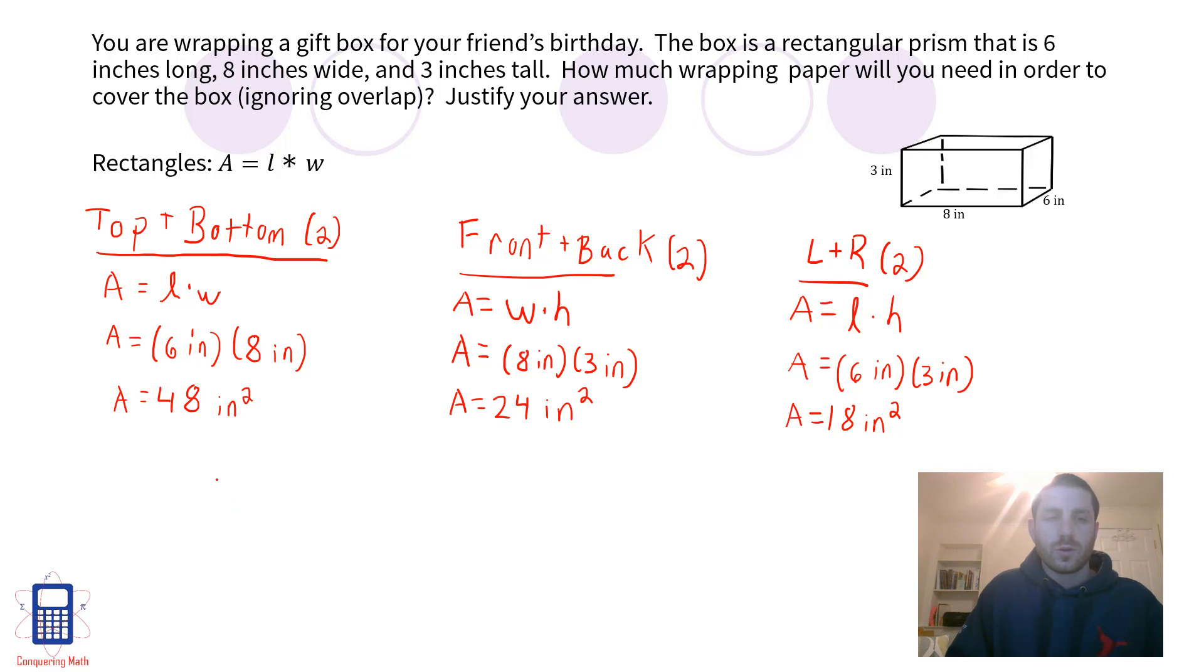So what we'll do now is we'll find the surface area, which we use a capital S for surface area. So we need to add 48 square inches, 24 square inches, and 18 square inches to find the surface area, but we need to use each of those twice. So we can either add them all up and then double it or double each one individually.